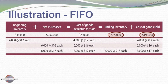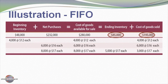Looking first at FIFO, here we have calculations. We had beginning inventory of $48,000 — that's 4,000 units at $12 each. We had purchases totaling $232,000, that is 6,000 times $16 plus 8,000 times $17. Cumulatively, that's $280,000 of cost of goods available for sale. When we allocate the $280,000 between ending inventory and cost of goods sold, we find $85,000 in ending inventory and $195,000 in cost of goods sold.